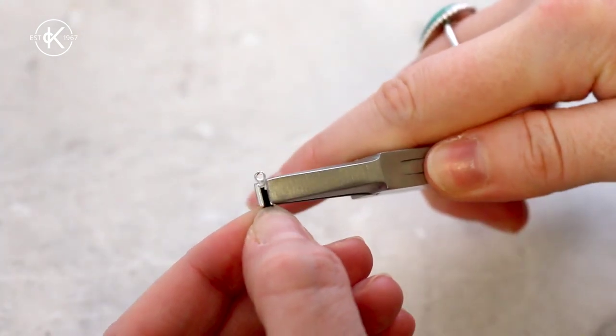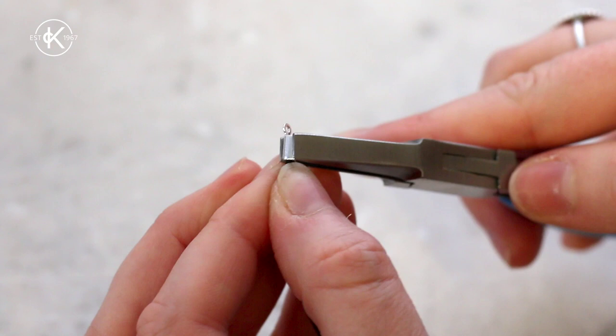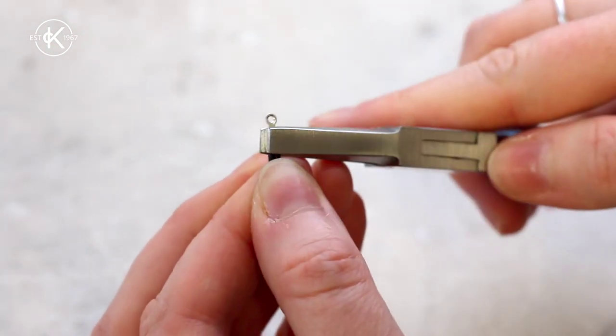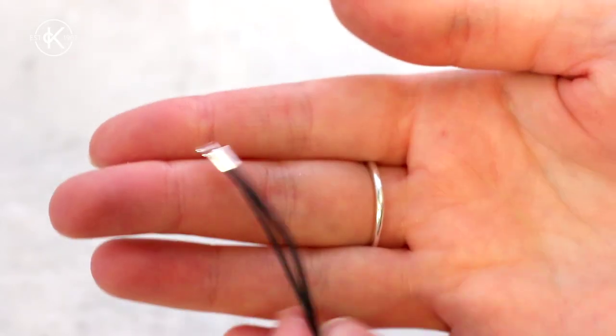Next, grab your flat nose pliers and fold each of the ends over to secure in place. The cord ends can be quite stiff so you may need to squeeze quite hard, but just keep adjusting until you're happy with the finish.